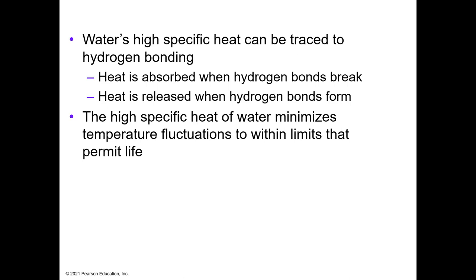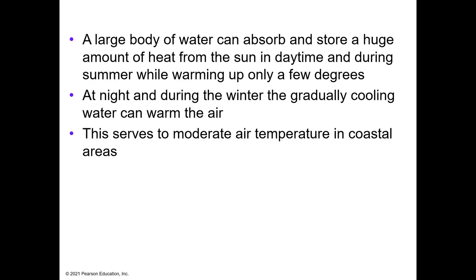The high specific heat of water minimizes temperature fluctuations on the planet. Large bodies of water like the oceans can absorb and store large amounts of heat, which is why oceans stay warm at night while land cools down. This is also one reason why, because of Gulf streams and currents, some areas of land are warmer — because the ocean is warmer and that heat is being transferred from the ocean to the land.